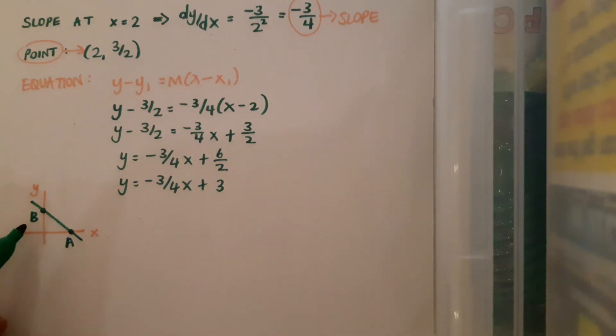Well the B point is going to be the y-intercept, which coincides with my constant that I have here, since I have my equation in the form y equals mx plus c. So I can state straight away that B is (0, 3).